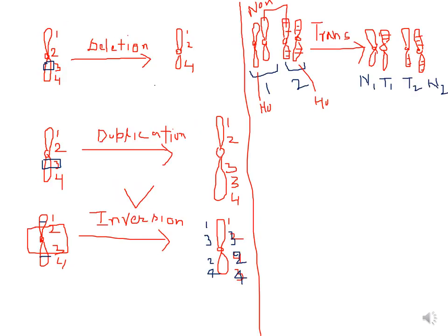Deletion is when a part of the chromosome gets deleted. For example, in this chromosome you can see four genes. If gene number three gets deleted, this becomes a deleted chromosome, which is shorter than the original chromosome.